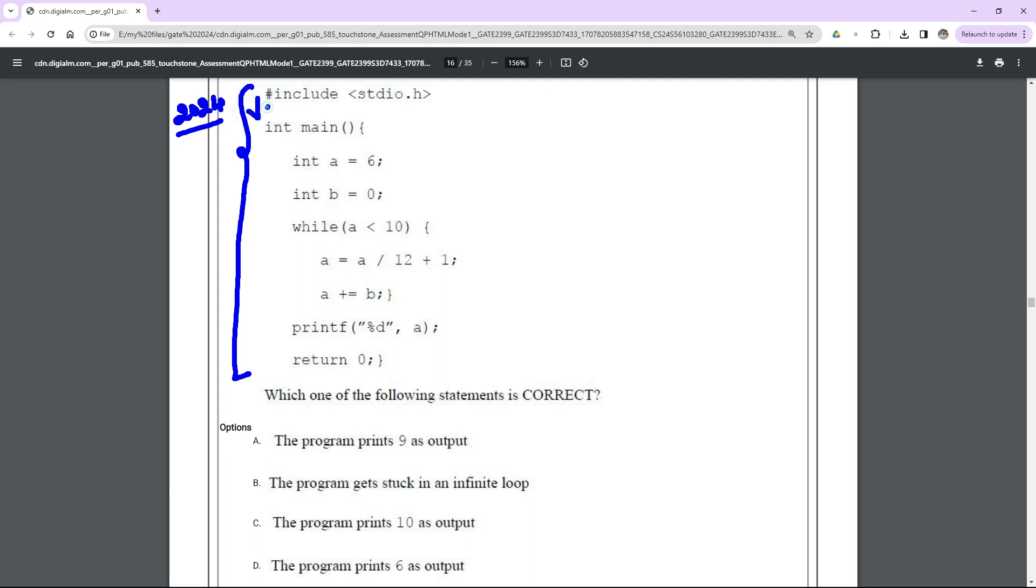You know every C program is going to start its execution from the main method. Here they have declared one integer variable a with a value as 6 and b value as 0, and they start with one while loop that contains two statements.